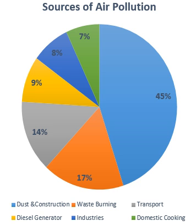Traditional fuel dominates domestic energy use in rural India and accounts for about 90% of the total; in urban areas, it constitutes about 24%. India burns tenfold more fuelwood every year than the United States. The fuelwood quality in India is different from the dry firewood of the United States, and the Indian stoves in use are less efficient, thereby producing more smoke and air pollutants per kilogram equivalent.